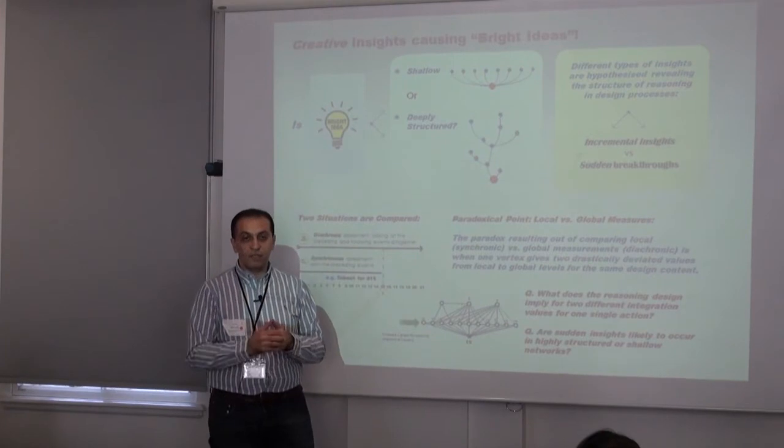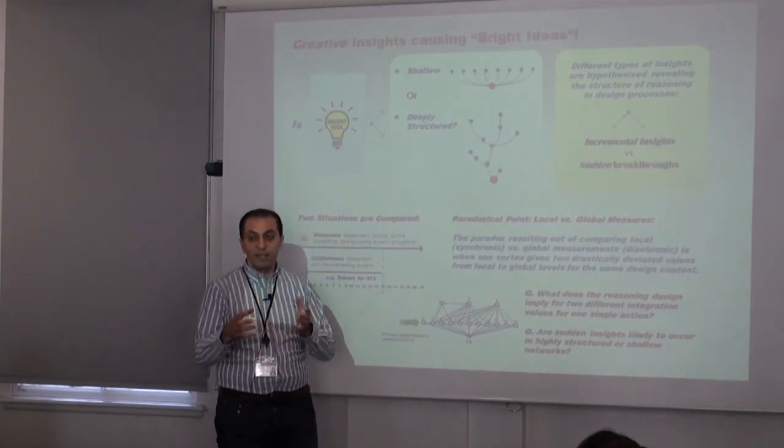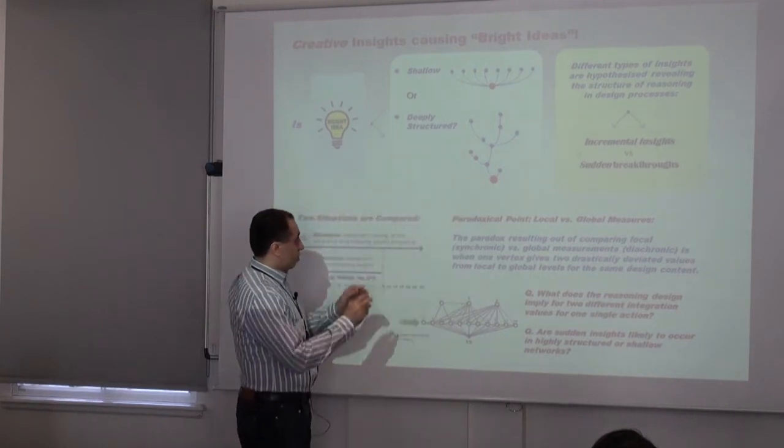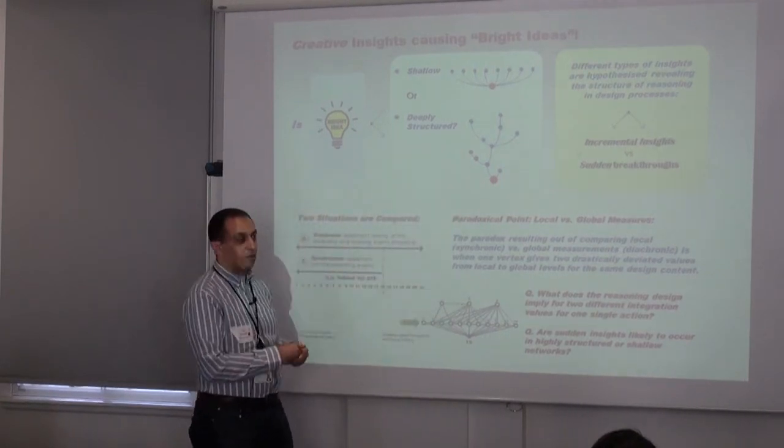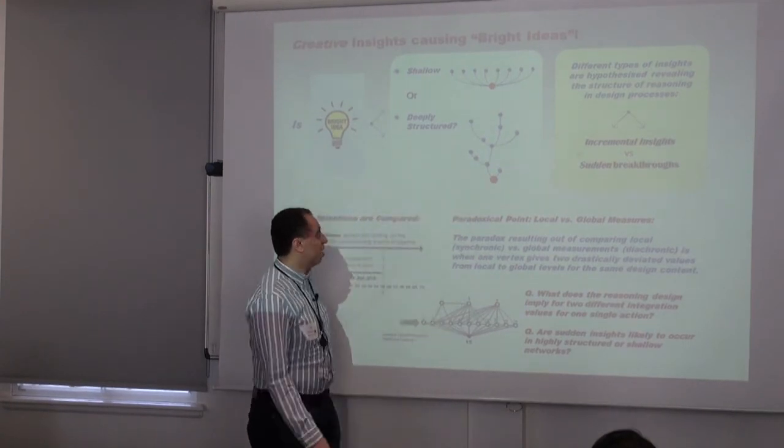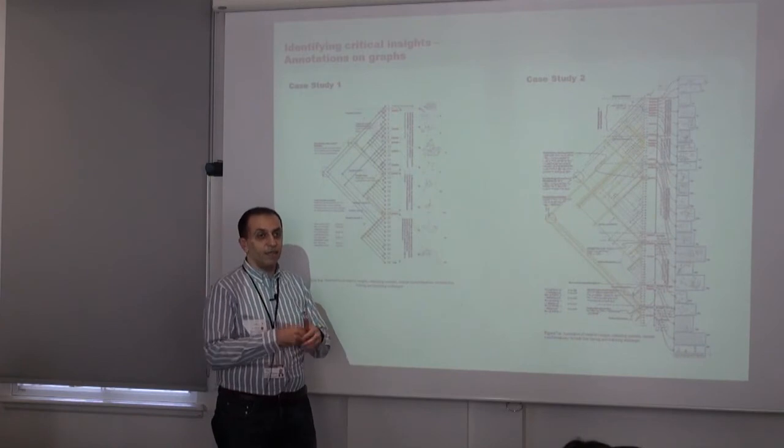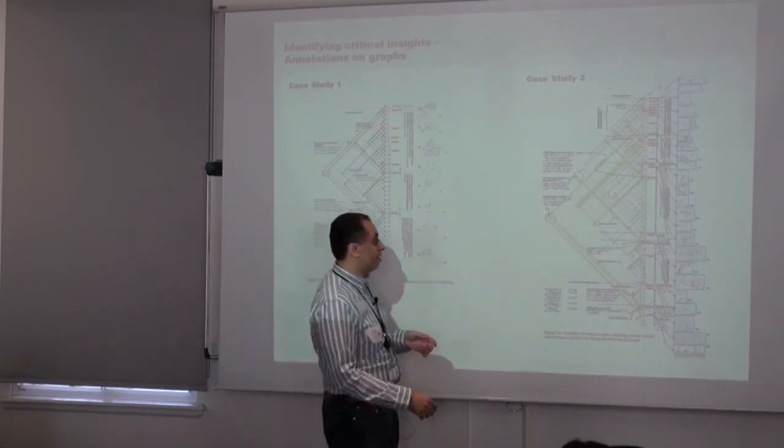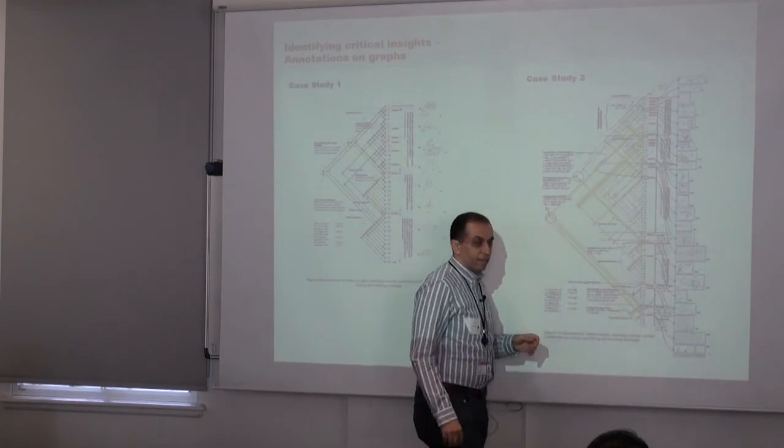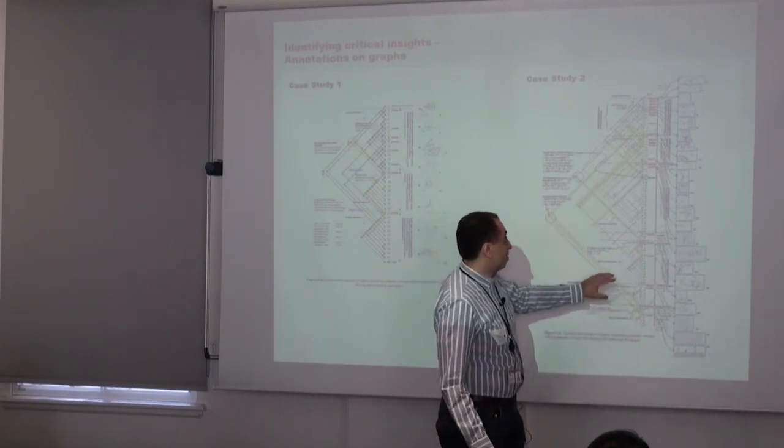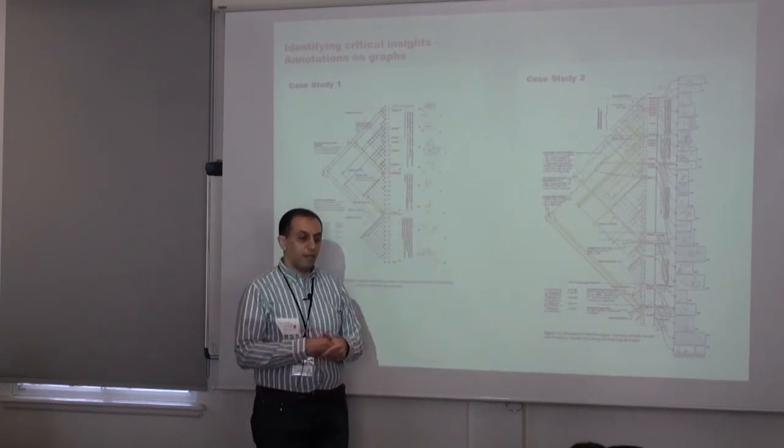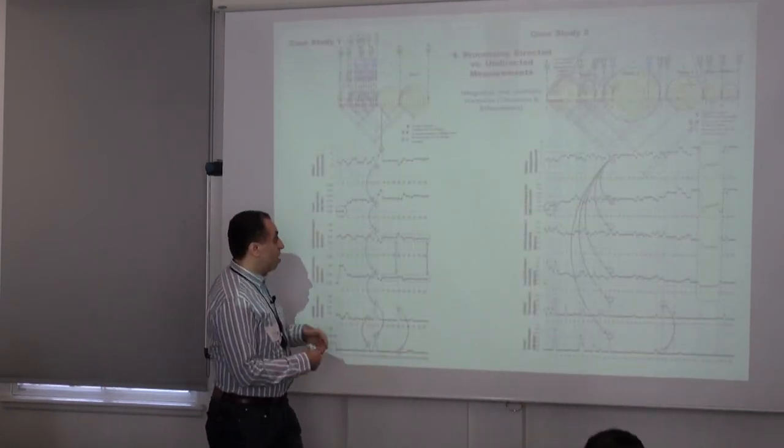We have two different types of structures of networks using network analysis. We have deep structures and shallow structures. Sudden mental insights should be disconnecting from the whole link graph—we have a totally disconnected event that might be replaced from the link graph, which was a new idea introduced to the process.